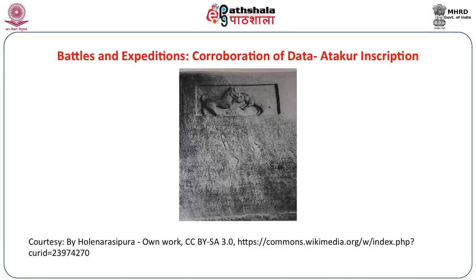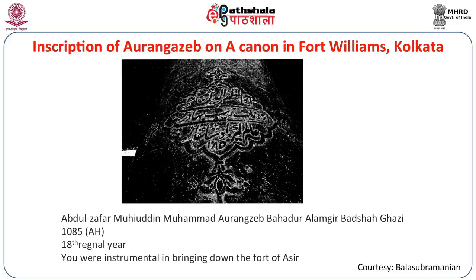Therefore, we not only should study inscriptions and their context but also examine their distribution — where exactly they are found. Even their find spot can tell us a lot. This is the Attakur inscription, carved and found in Karnataka. We also have an inscription of Aurangzeb on a cannon found in Fort William, which talks about his conquest and how this particular cannon helped him conquer certain territory. The original place of this cannon is not known; it is currently preserved in Fort William in Calcutta. The study of inscriptions can give a lot of information on the political conquests of kings.